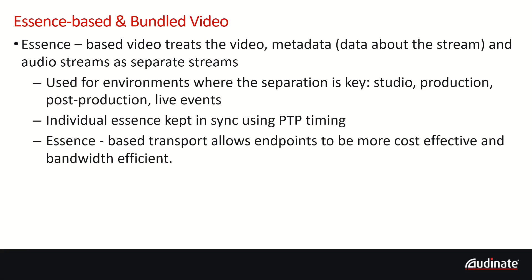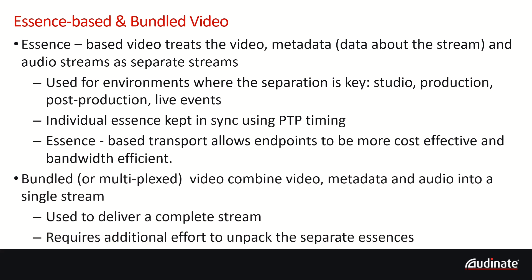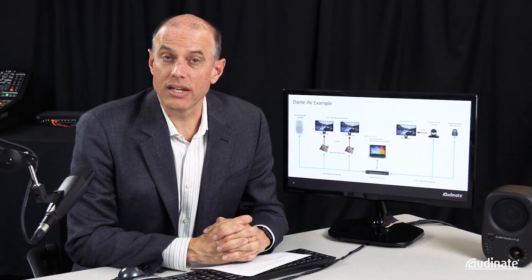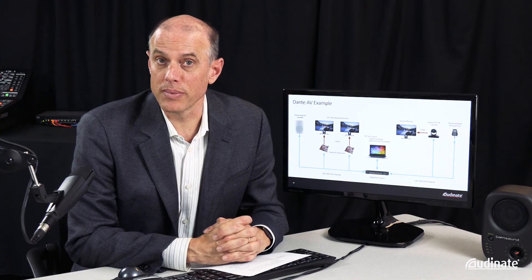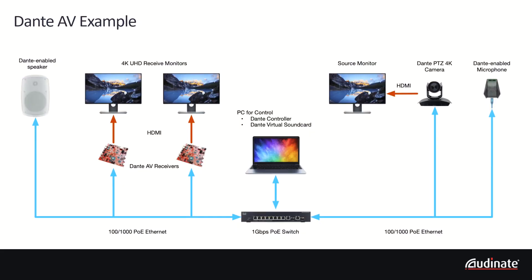In video compression, the coded video and audio files inside of a video file container are called an essence. Essence-based video is used to transmit the separate files of video, audio, and metadata information about the file to potentially different destinations, all kept in sync using PTP, or the Precision Time Protocol. Bundled or multiplex video transmits the entire package altogether. Dante AV enables complex video and audio deployments; its use of essences enables distributing video and audio separately to various output devices as needed. Dante AV can also distribute 4K UHD video without costly matrix switchers using a 1 gigabit switch.